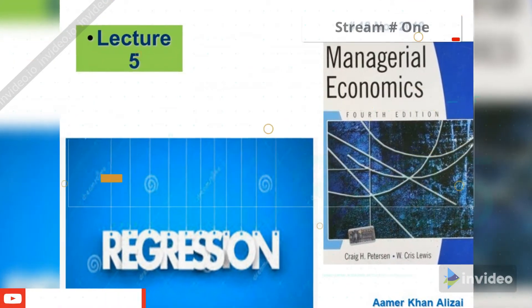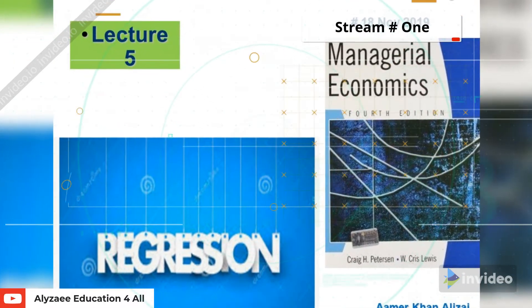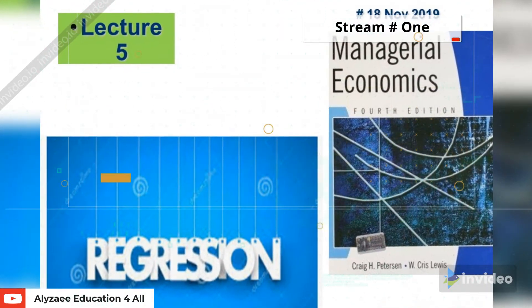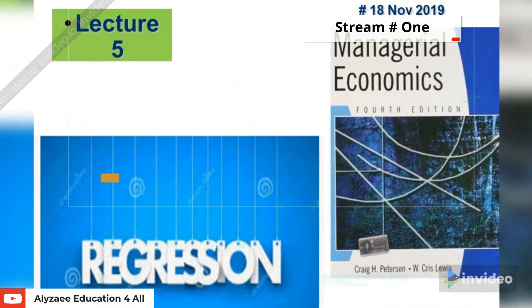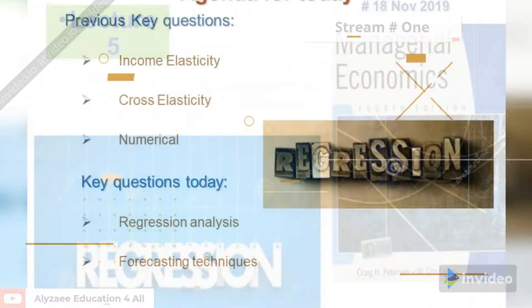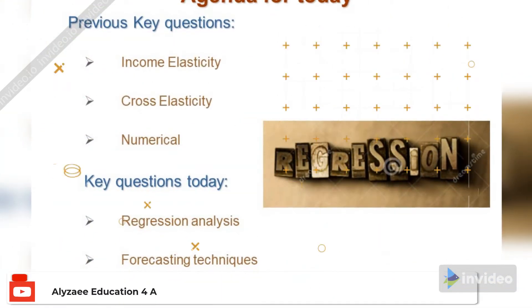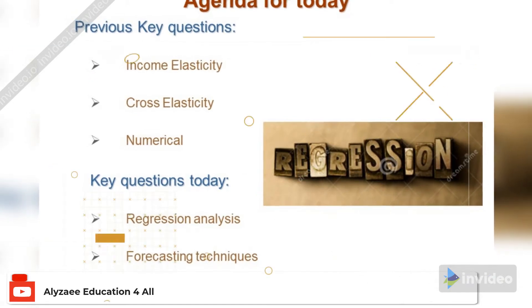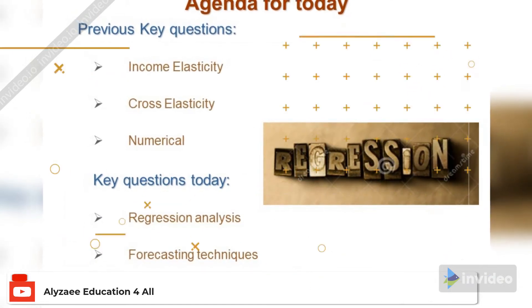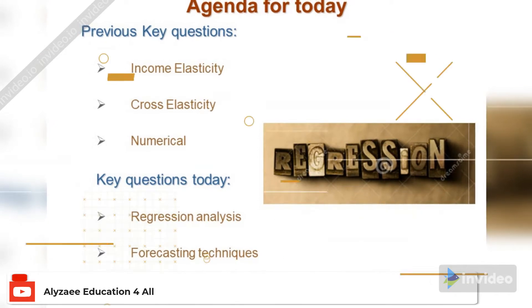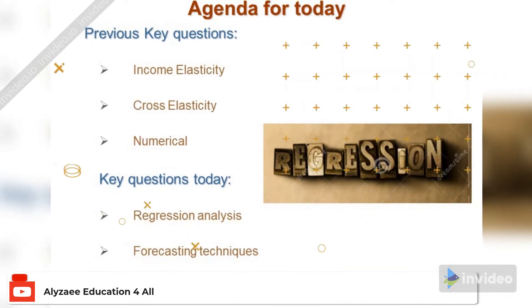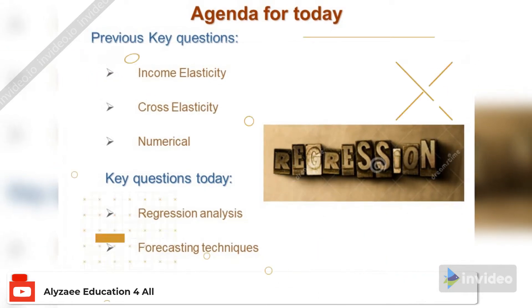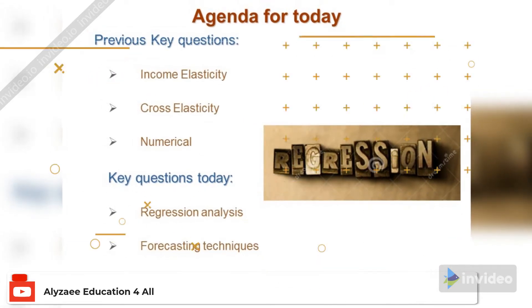Bismillahirrahmanirrahim, this is Amir Khan Al-Zai continuing with Lecture 5. In the previous lecture we discussed income elasticity and cross elasticity, explaining them with different examples and numerical calculations. In this particular lecture we will be discussing regression analysis and different forecasting techniques.